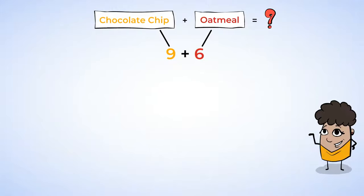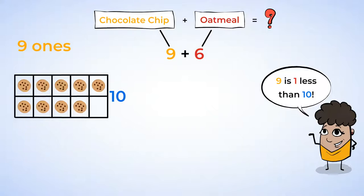With nine chocolate chip cookies, you know you have nine ones. You also know that nine is one less than 10. So you can make a group of 10. But where will this last one come from to make the 10? The oatmeal cookies, of course.